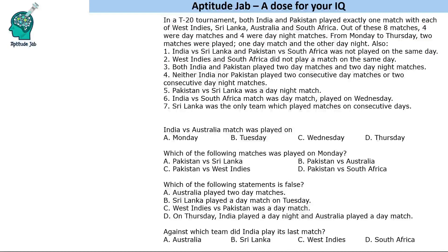Welcome to aptitude. This is a set based on the scheduling of a tournament. There is a T20 tournament in which India and Pakistan played one match against each of these four teams: West Indies, Sri Lanka, Australia, and South Africa. Out of these eight matches, four were day matches and four were day-night matches. From Monday to Thursday, two matches were played every day — one day match and one day-night match.